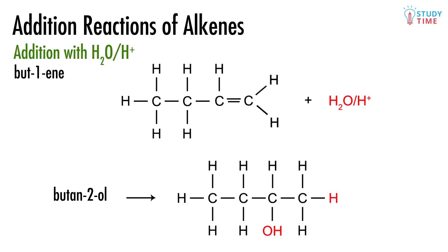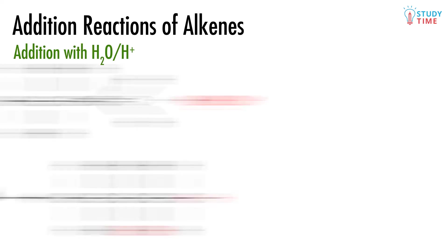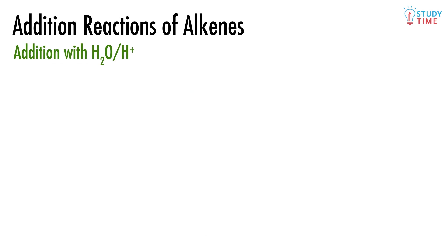In fact, they are both the correct answer. There are two possible products when this reaction happens. One is the major product, and that's the product that we see getting made more often. And the other is the minor product, and that's the one we don't get as much of. And now for the big question, which is the major and which is the minor product?